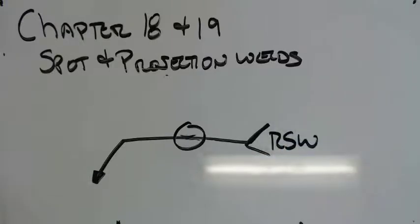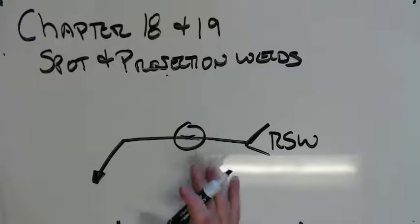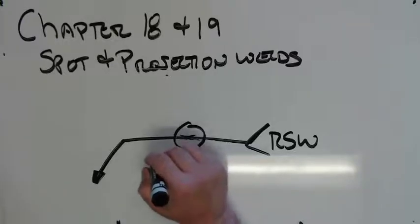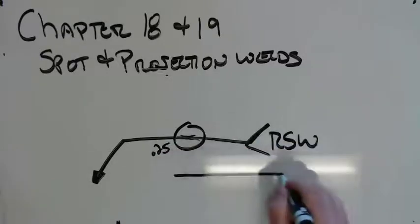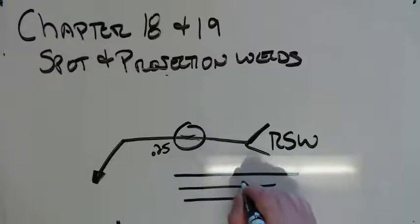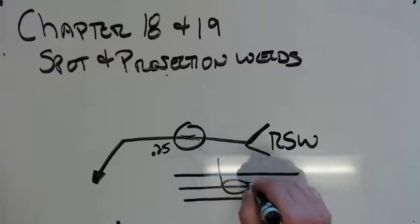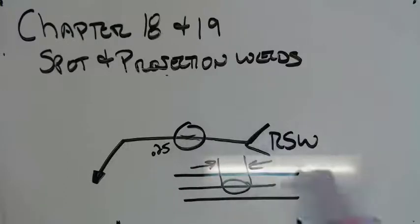So in this symbol, we can also say a lot of the stuff we use for other welding symbols. We can talk about size or strength, the spacing, number of spot welds, all that stuff. So when we're talking about size or strength, it's one or the other, and we can do it either way. Either we put a diameter here, 0.25, and what that means is that is the diameter of the weld nugget. So my weld nugget in here is 0.25 inches.